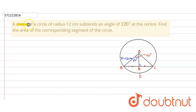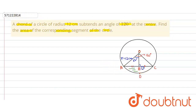In the given question, a chord of a circle of radius 12 centimeters subtends an angle of 120 degrees at the center. We have to find the area of the corresponding segment of the circle — that is, this shaded part. The angle subtended by the chord at the center is equal to 120 degrees.